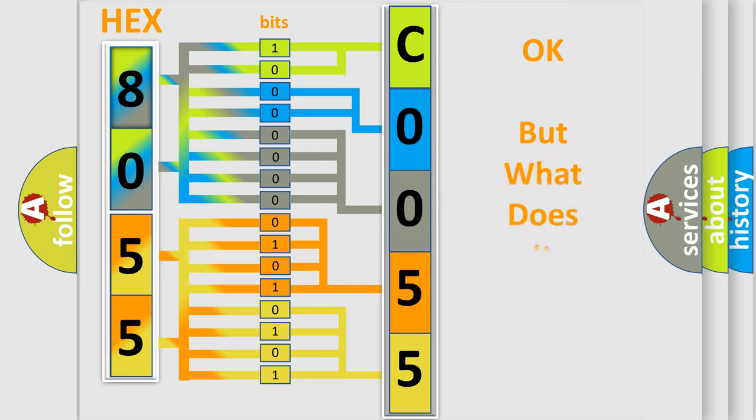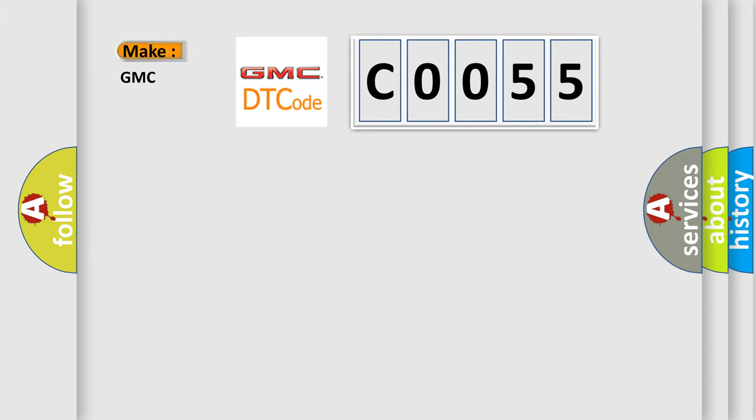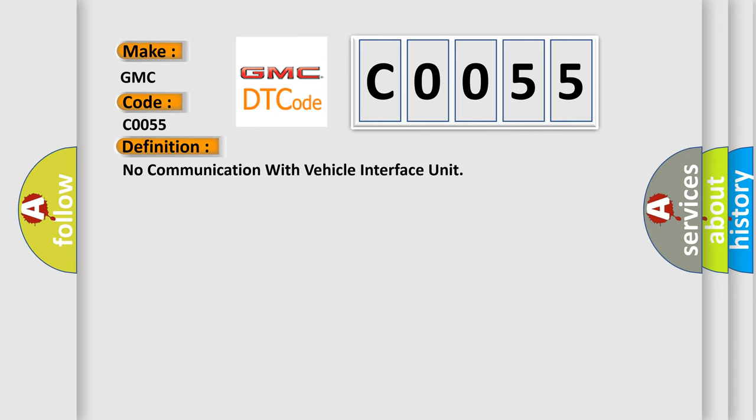The number itself does not make sense to us if we cannot assign information about what it actually expresses. So, what does the Diagnostic Trouble Code C0055 interpret specifically for GMC car manufacturers?